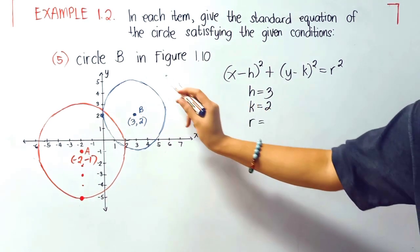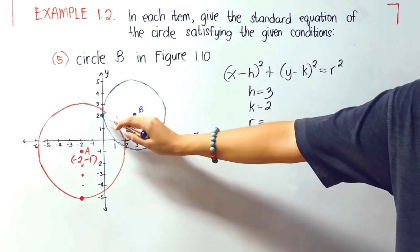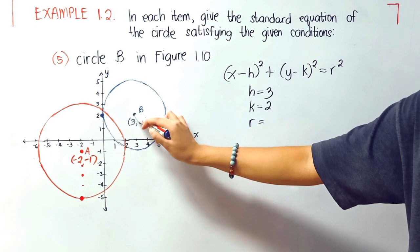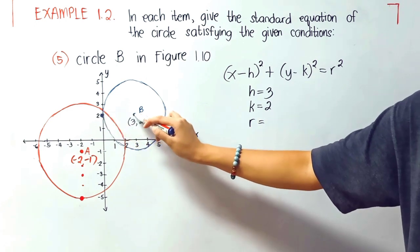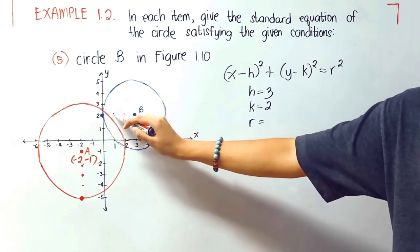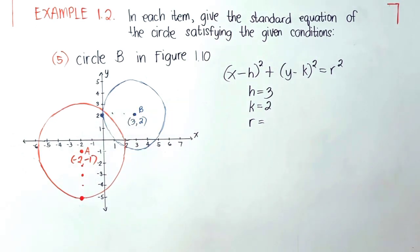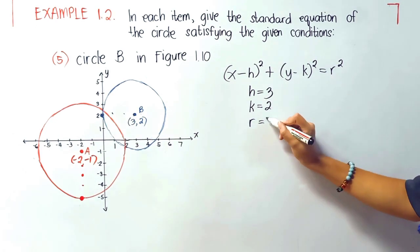I will be selecting a point here in this circle, and I have chosen this point. Now I will just count the number of units from the center to that point: 1, 2, and 3. Therefore, our radius is 3.